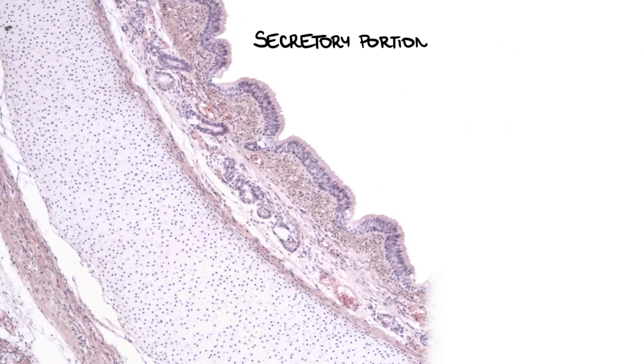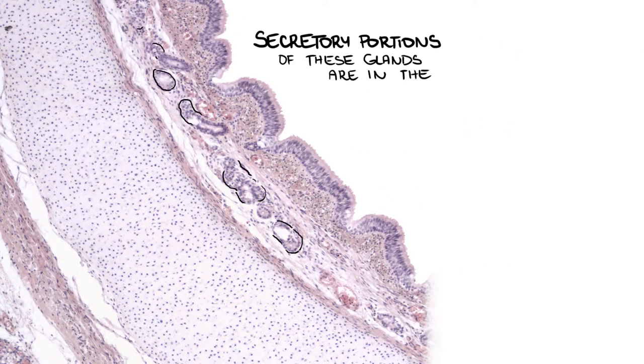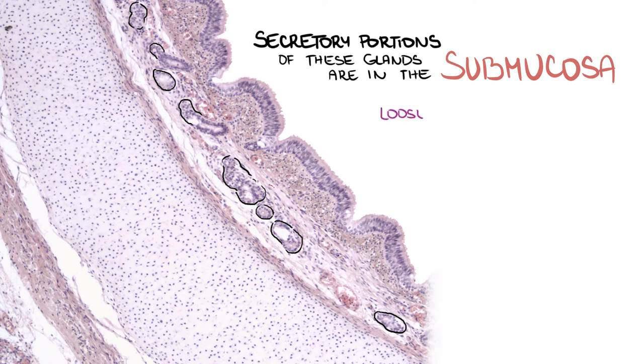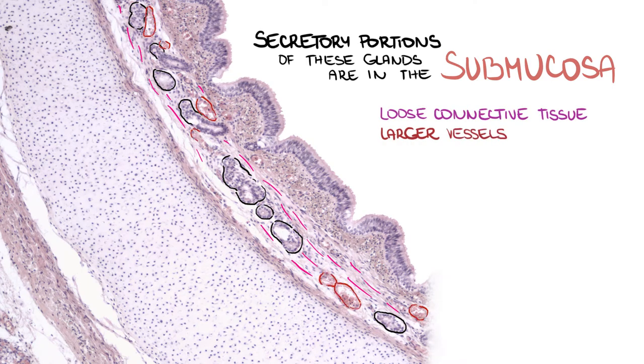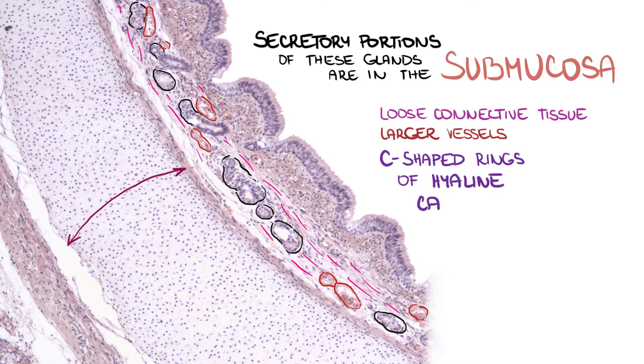Secretory portions of these glands are in the submucosa, together with loose connective tissue, large vessels, and C-shaped rings of hyaline cartilage.